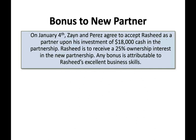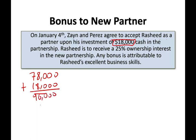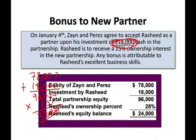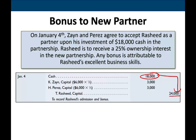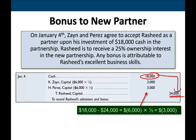Example — bonus to new partner: On January 4th, Zane and Perez agree to accept Rasheed upon his investment of $18,000. The existing capital is $78,000 plus $18,000 equals $96,000. 25% of $96,000 is $24,000 — so Rasheed gets $24,000 in capital for only $18,000 paid. The $6,000 difference comes out of Zane's and Perez's capital, $3,000 each. The entry is debit cash $18,000, debit Zane's capital $3,000, debit Perez's capital $3,000, credit Rasheed's capital $24,000. The old partners grant this bonus because they need Rasheed to join.